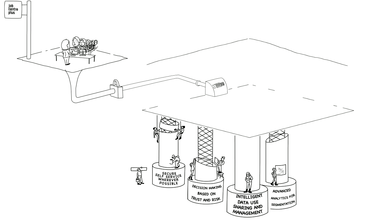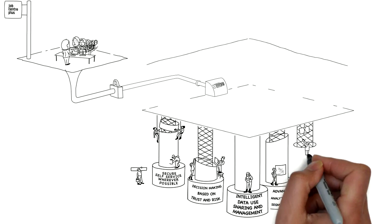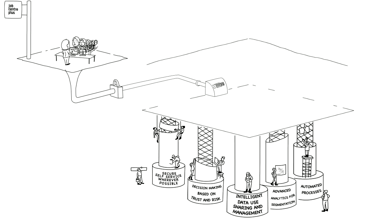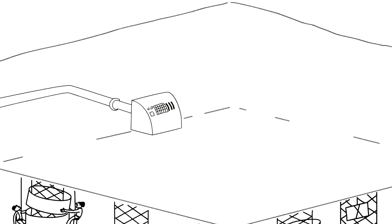Advanced analytics for segmentation identifies customers who may be vulnerable and require a different level of service. Automated processes create low touch services that permit DWP staff to spend more time with their customers. And lastly, customer behaviour change is where society changes and services must adapt with agility.